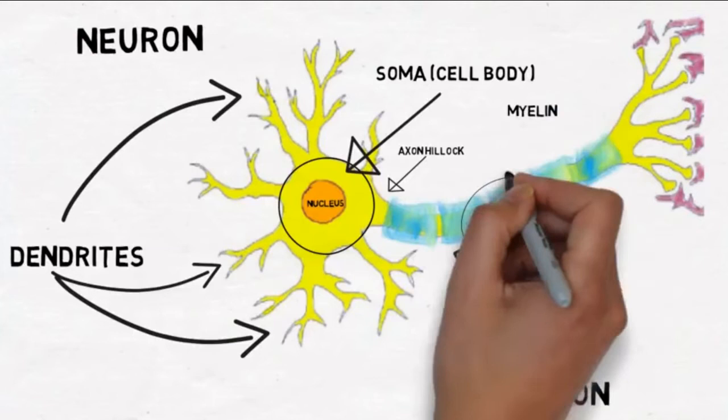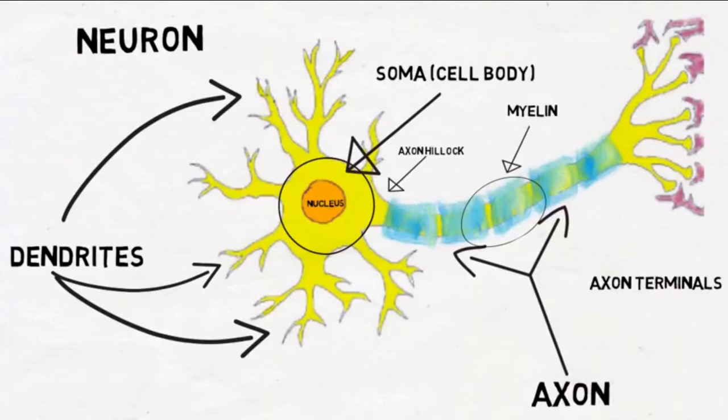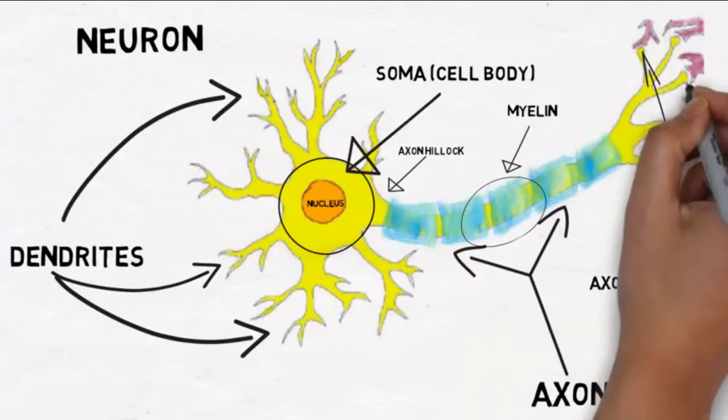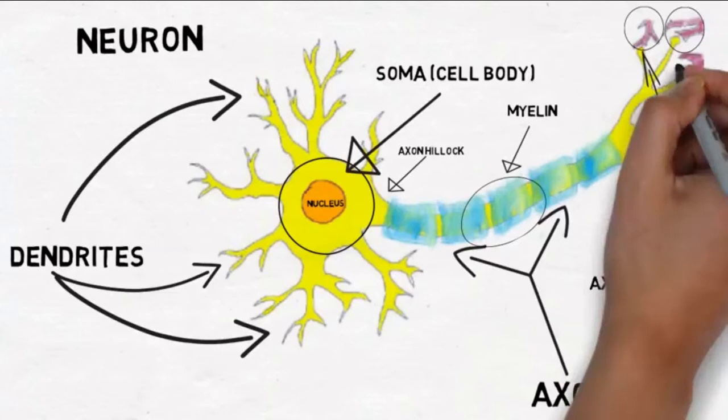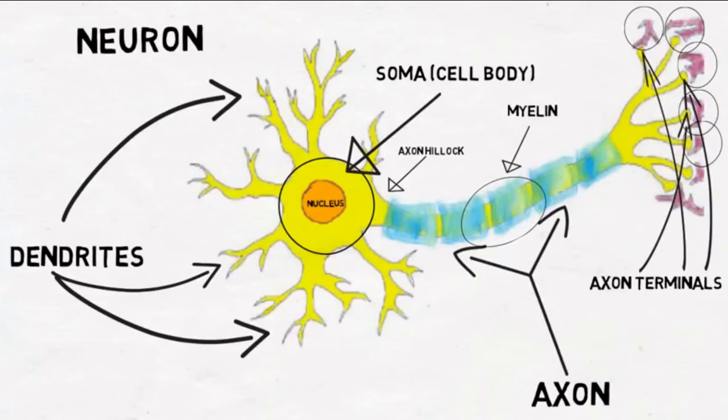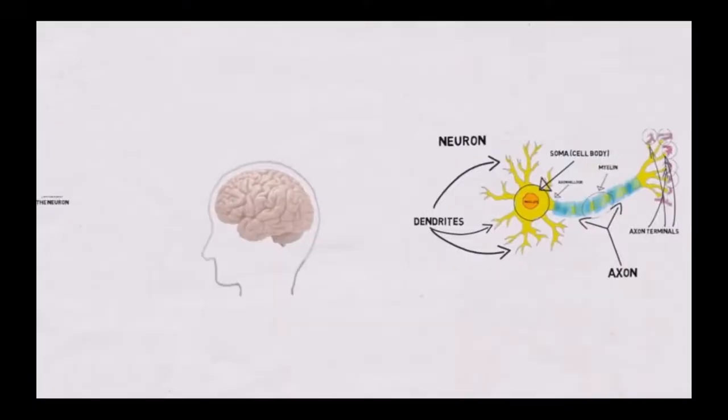The last step for the action potential is the axon terminals, also known as synaptic buttons. When the signal reaches the axon terminals, it can cause the release of neurotransmitter. These purple structures represent the dendrites of another neuron. When a neurotransmitter is released from axon terminals, it interacts with receptors on the dendrites of the next neuron, and then the process repeats with the next neuron.